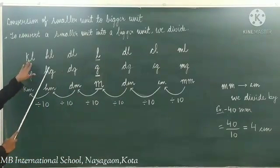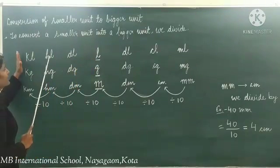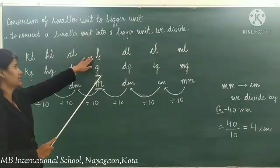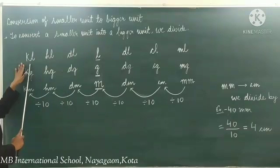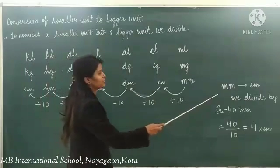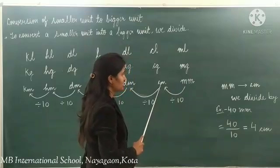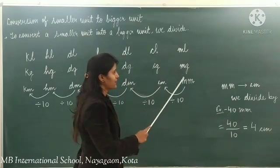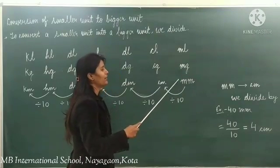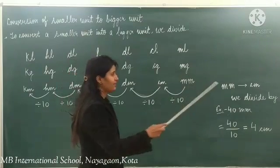If asked to convert kiloliter into liter — that is bigger unit to smaller unit — we multiply. But to convert liter into kiloliter, we move left, so divide by 1000. For example, to convert millimeter into centimeter: if the question were centimeter to millimeter, we would simply multiply by 10. But now to convert millimeter into centimeter, we divide by 10.